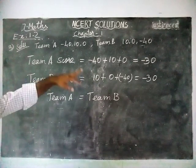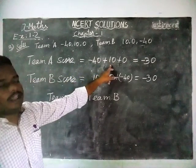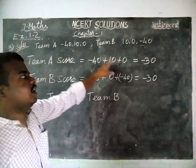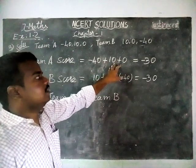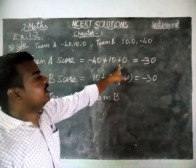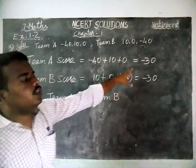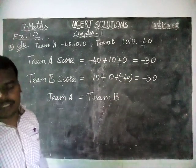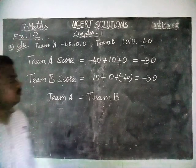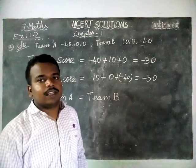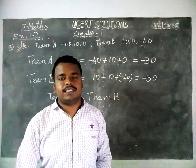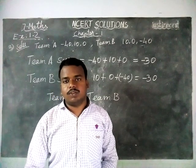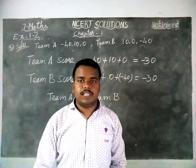We can add the numbers in any order — we can add minus 40 first, last, or in between. If we change the order in addition, the value will not change. That is what the last part of the question asked. Thank you students — kindly share your suggestions in the comments box and share this video with your friends also. Thank you.